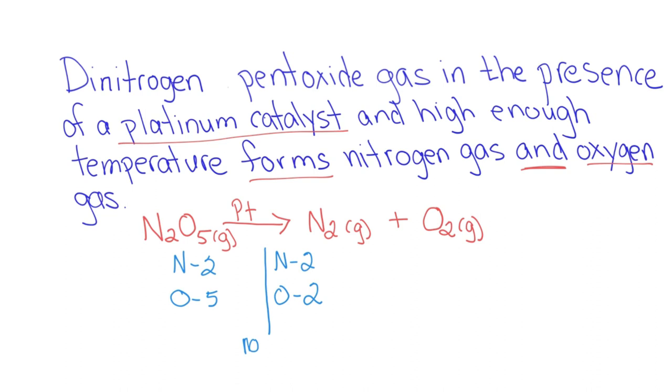So in order to get 10 oxygen over here, if I put a 2 in front of the dinitrogen pentoxide, that gives me 4 nitrogen and it gives me 10 oxygen. To get 10 oxygen on the product side, I have to put a coefficient of 5 in front of my oxygen, which gives me 10 oxygen.